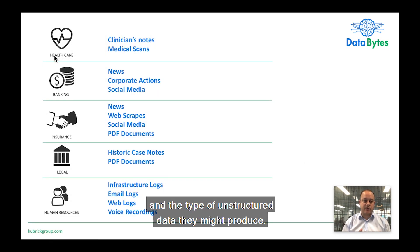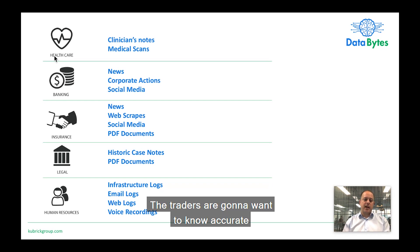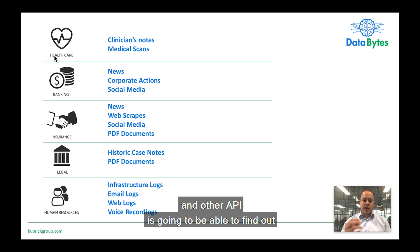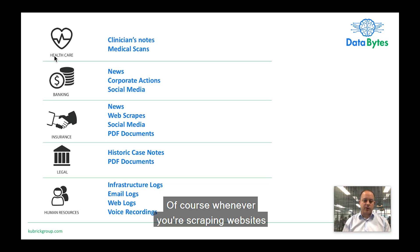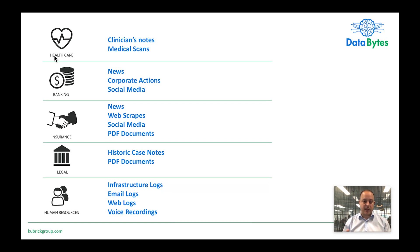We're going to consider a few different industries and the type of unstructured data they might produce. In financial services, looking at the oil and gas side — the trader is going to want accurate and near real-time information about supply and demand in oil. Where can the trader get this information? By scraping news and social media and other APIs, they're going to be able to find out what is going on in the world as regards supply and demand. Of course, whenever you're scraping websites, you need to make sure that you obey the rate limit rules, and if it's an unsolicited scrape, you need to make sure that this is legal.